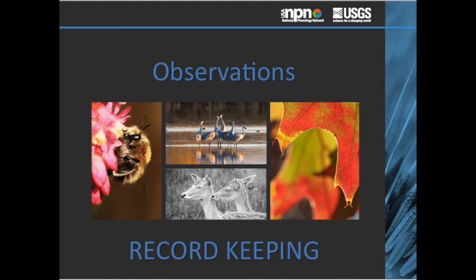Observations collected in Nature's Notebook are an organized way to store information that has been gathered about nature for hundreds of years. These observations become part of a permanent record and are designed to be easy to understand, yet rigorous in their ability to paint an accurate picture of the species interactions occurring at an ecosystem level. With some training and calibration, participants can commit to joining for the long term and, through time, hone their observation skills.